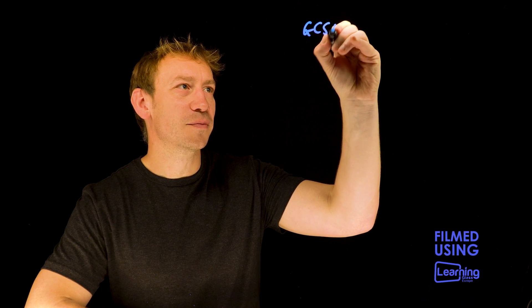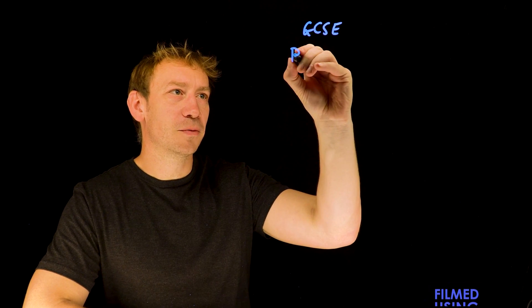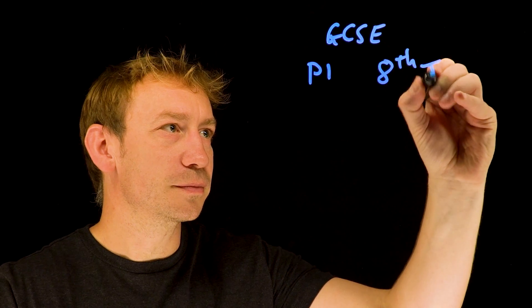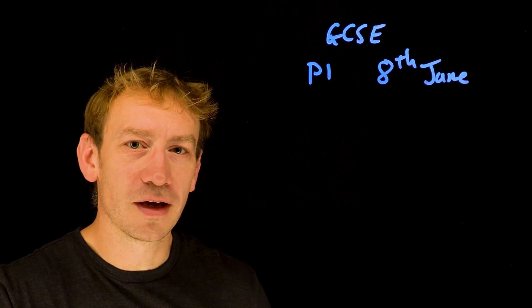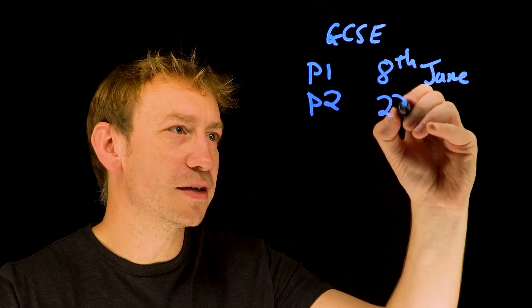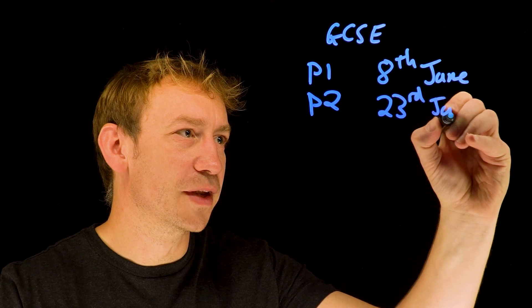Let's have a look at the dates for GCSE first of all. In England, the dates for paper one are the 8th of June, and that's followed a couple of weeks later when you do paper two on the 23rd of June.